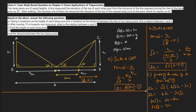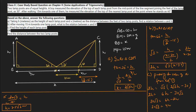Dividing both sides, h equals 30 root 3 divided by 4. Simplifying: 30 divided by 4 is 7.5, so h equals 7.5 root 3 meters. This is the height of each lamppost and the answer to part C.